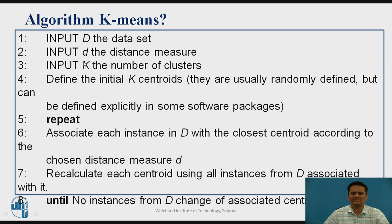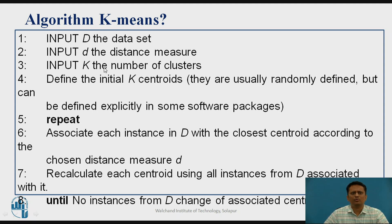You also need to specify K. In K-means clustering, the value of K represents the number of clusters into which you want to divide the whole dataset. So these three — the dataset, distance measure selection, and number of clusters — are the required inputs.